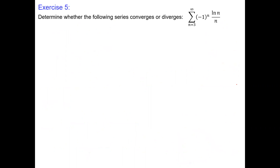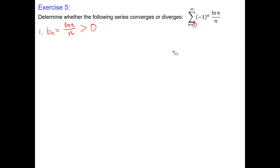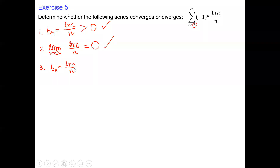One more exercise: negative one to the n times natural log of n over n. B sub n is natural log of n over n — definitely positive for n greater than one (since ln(1) = 0 but that's still fine). The limit at infinity: natural log of n is slower than n, so the denominator wins and the limit is zero. Check and check. Is b sub n decreasing? We'll need to check with a derivative.